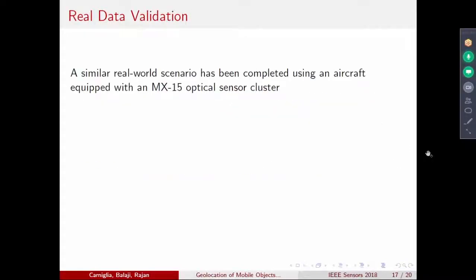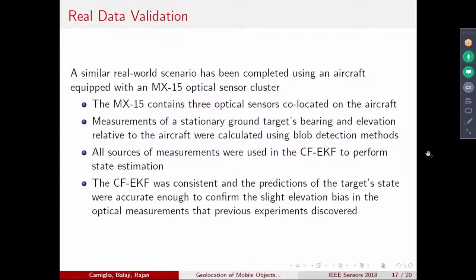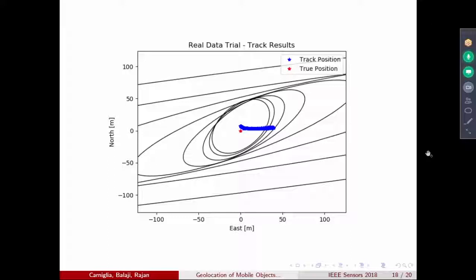We did it with real data. In the real data, we have a real airborne sensor, which is an aircraft with MX-15 optical sensor cluster, three of them. All of them are collecting information. They're all co-located on the aircraft. We're measuring a stationary target, whose bearing and elevation is what we're trying to identify. We're using a similar blob detection method, and we use a centralized EKF to make the state estimation. We're seeing that the state estimation is consistent, which means the standard deviation is low, and the predictions of the target state are accurate enough to confirm the slight bias we're able to see in the optical measurements we've previously discovered. This is what we're showing. Over a period of time, this is the track position, this is the true position. You can see it goes towards the true position.